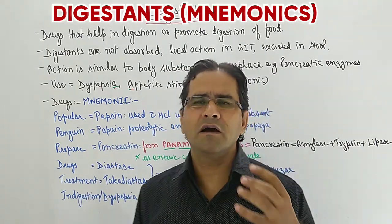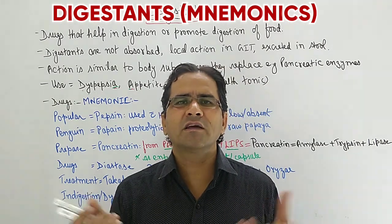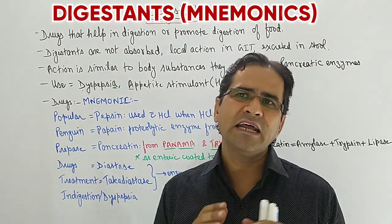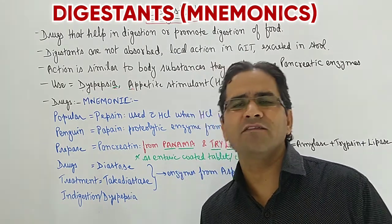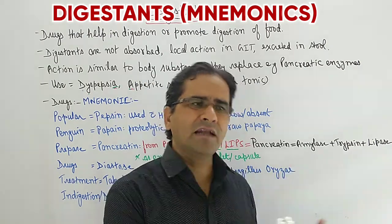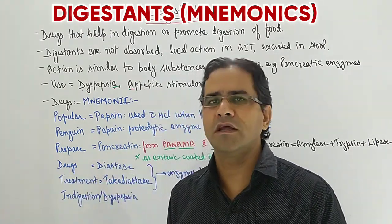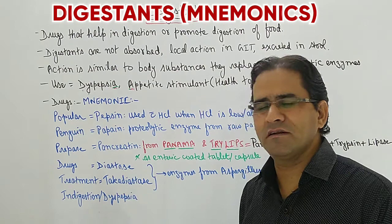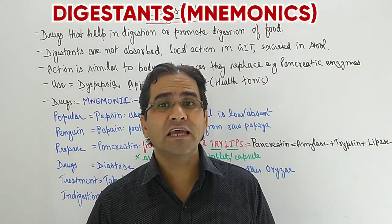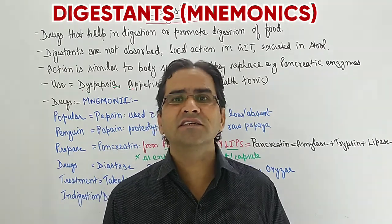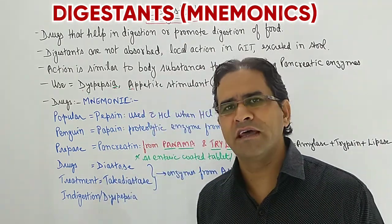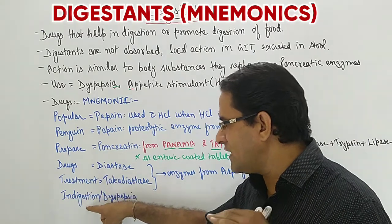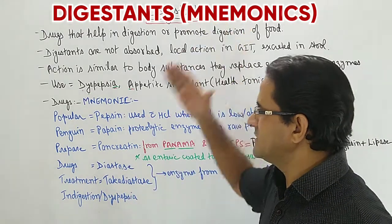If we remember penguins — the penguin lives in areas of temperature extremities and in spite of that it can easily survive and find food. So from that link we remember: 'Popular penguin prepare drugs for treatment of indigestion,' meaning dyspepsia — and that is what digestants are used for.